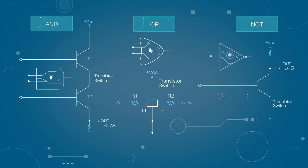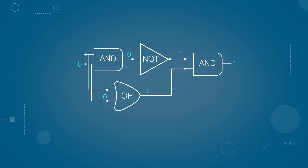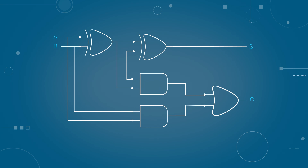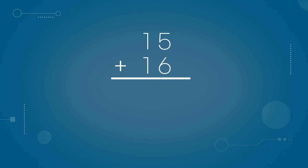So far, we've created simple logic structures using transistors. Now, let's use this to create a logic circuit capable of performing addition. What happens when you add 15 and 16? When you add 5 and 6, it becomes 11, which turns into 1 with a carry over. The carry is written as 1. Then, since there are three 10s, 3 is carried down, resulting in 31.